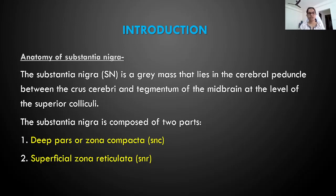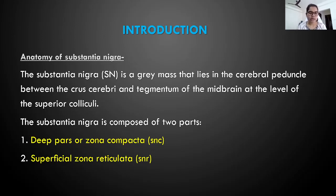Coming to the introduction, the substantia nigra is a gray mass that lies in the cerebral peduncle between the crus cerebri and tegmentum of the midbrain at the level of superior colliculi. It has two parts: superficial zona reticulata and deep zona compacta.